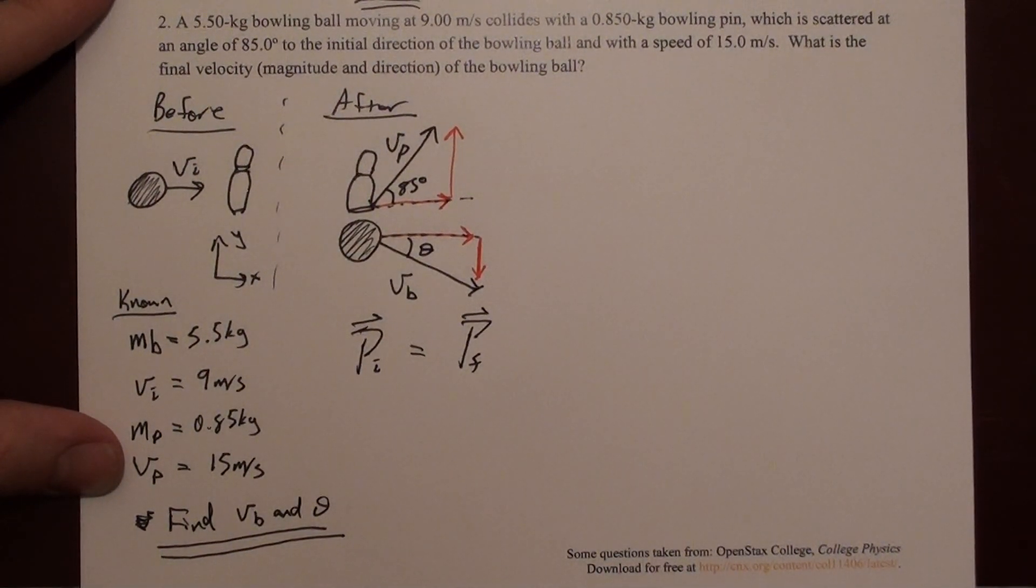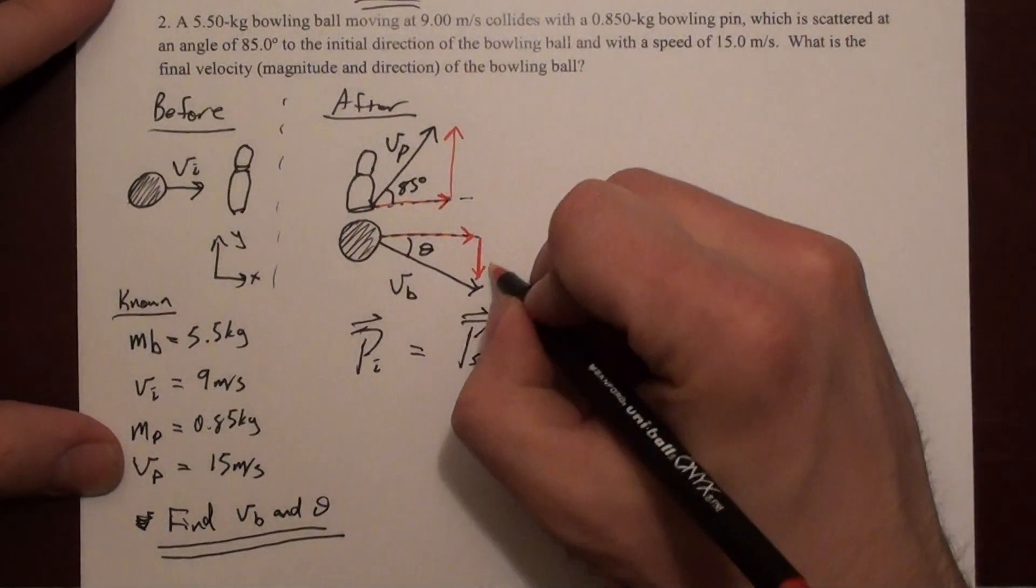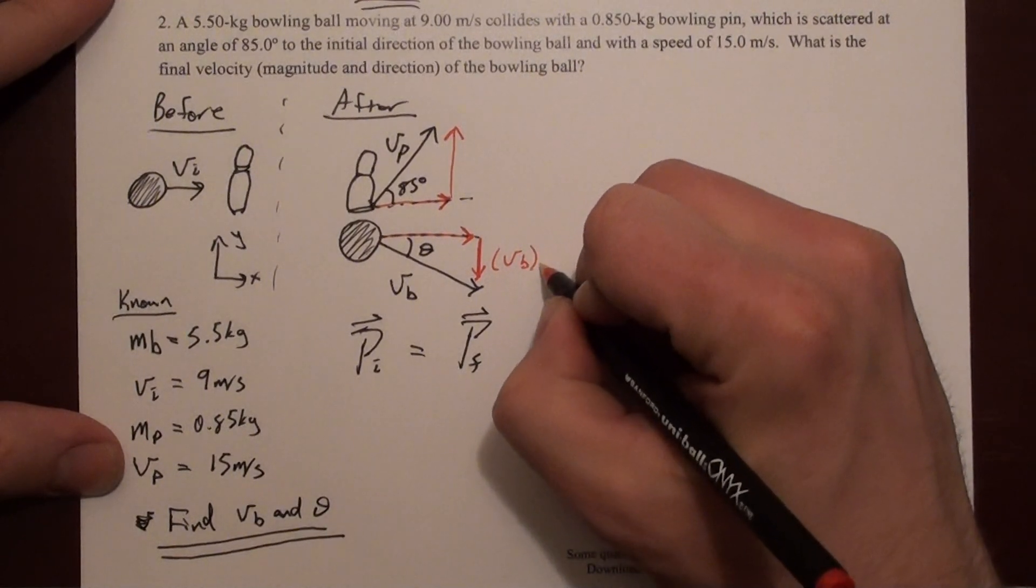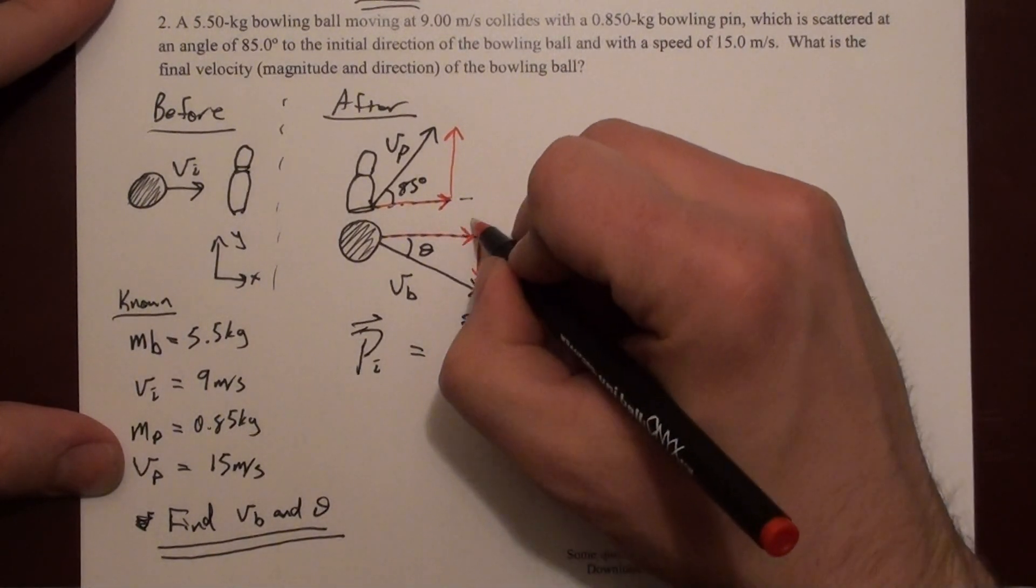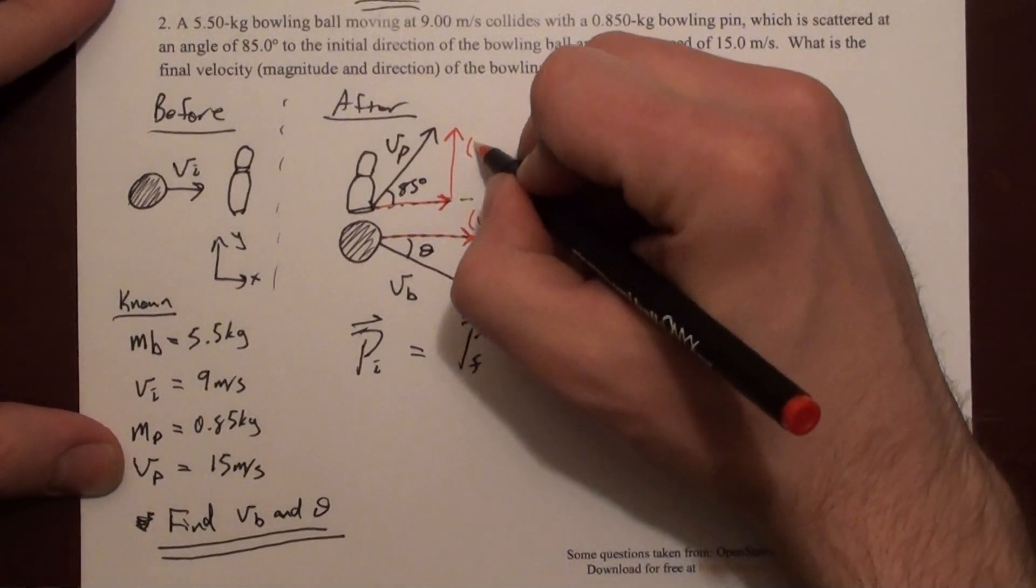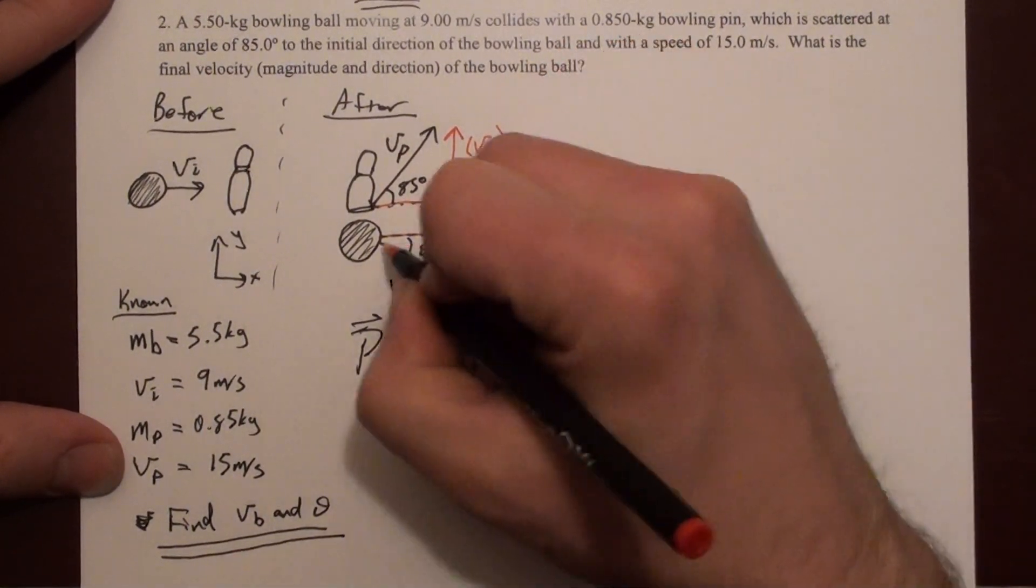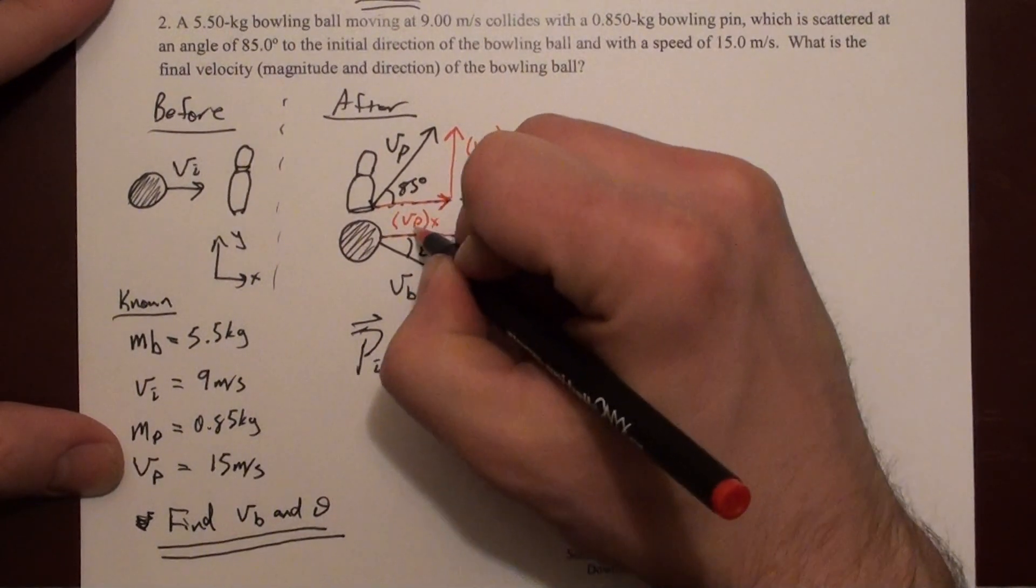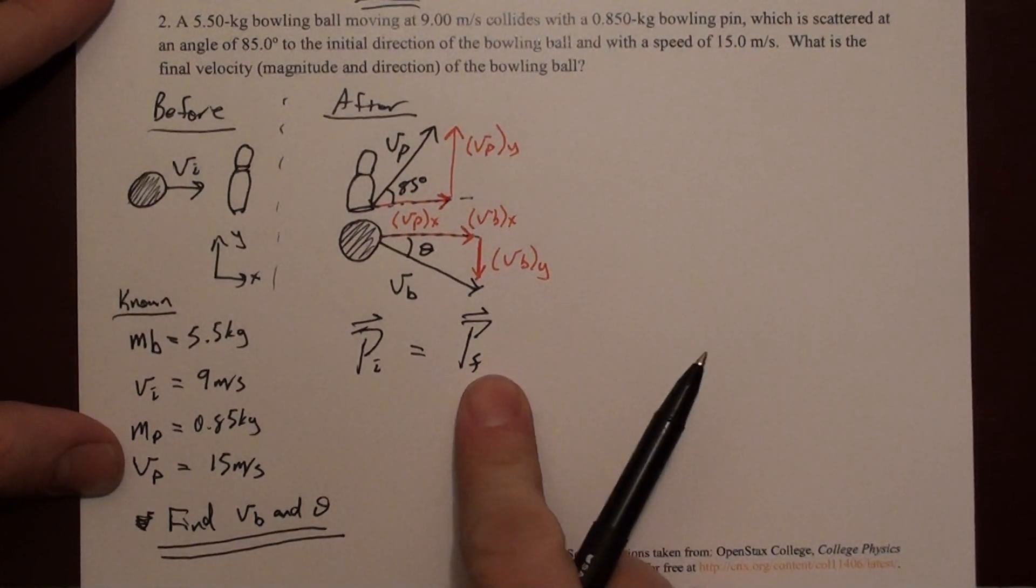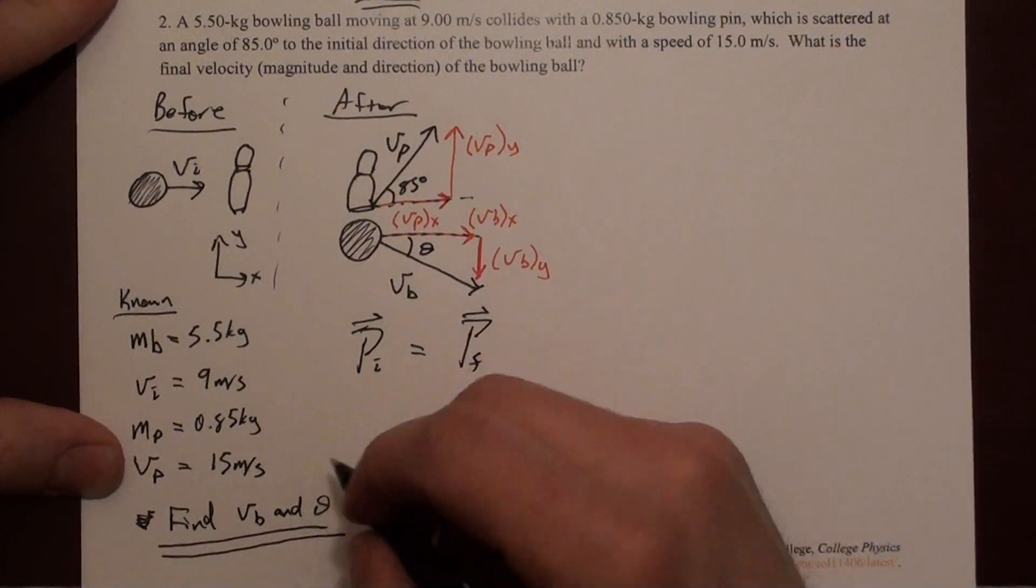Let me label these. This looks like vb y. This one would be vb x. This would be vp y. This one's vp x. We're going to write this in the x and y directions. Let's do y first.